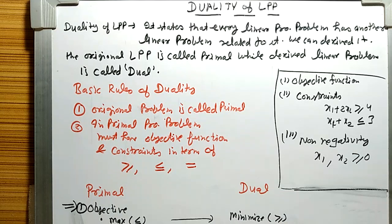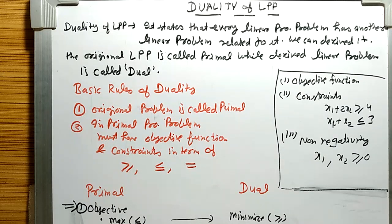Every linear programming problem has another linear programming problem related to it — every LPP has an associated LPP derived from it. The original linear programming problem is called the primal, while the derived linear programming problem is called the dual.